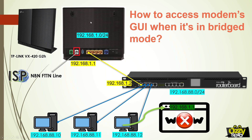This is the modem, and our network is on 192.168.1.0/24. The modem IP address is 192.168.1.1, and it is directly connected to our router. I am using a MikroTik router, and the IP address of the router port directly connected to the modem is 192.168.1.2.